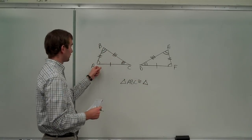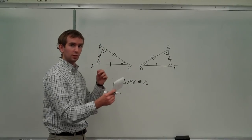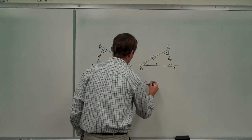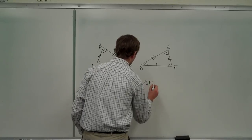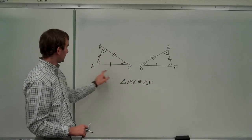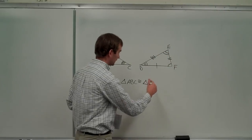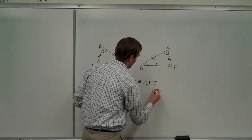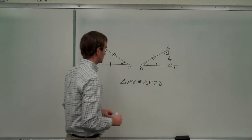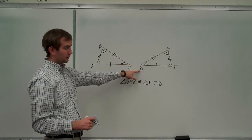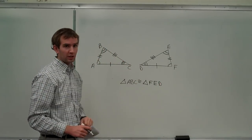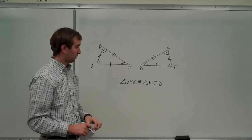So I started with A over here. It means I have to start with F over here because those are corresponding points. So, start with F. And then from A, I went to B. So from F, I go to E. And then finally, my last point, D. So that would be the correct congruence statement for those two triangles.